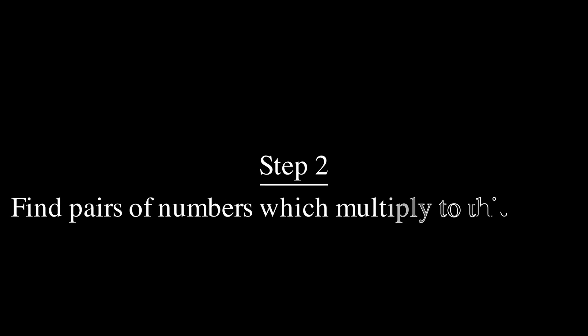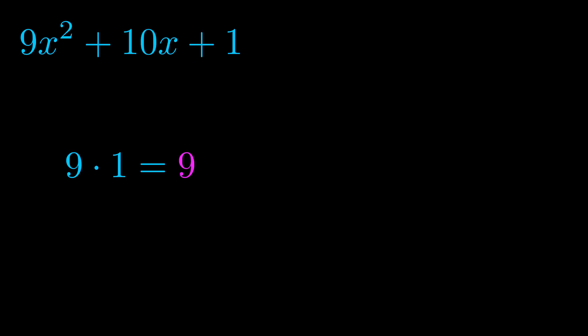Step two is to try to find all of the pairs which multiply to this number. Now it turns out you don't really need to find all of them, but go ahead and write down as many numbers as you can that multiply to the magenta value for now. Pause the video and resume when you're ready to continue.